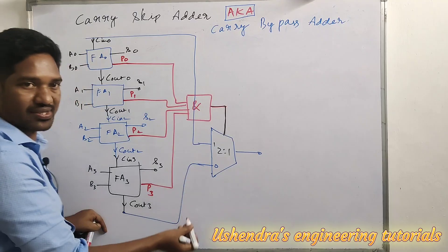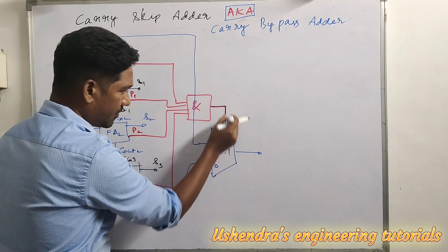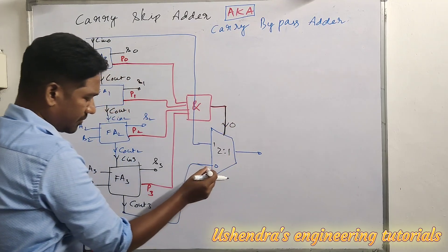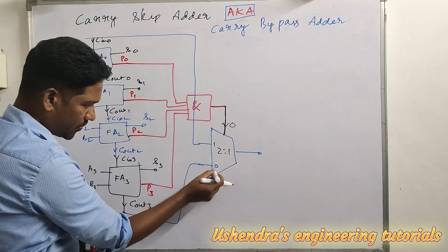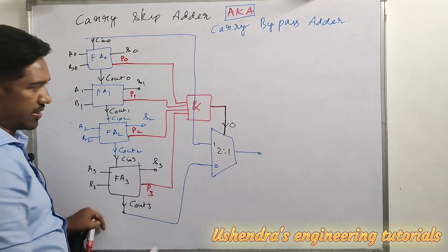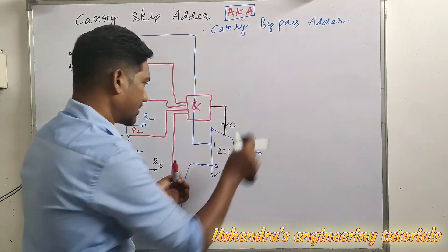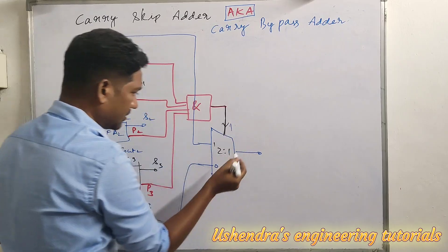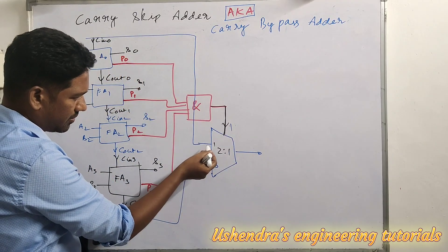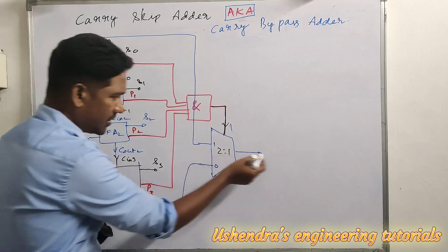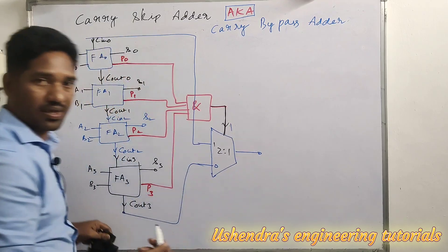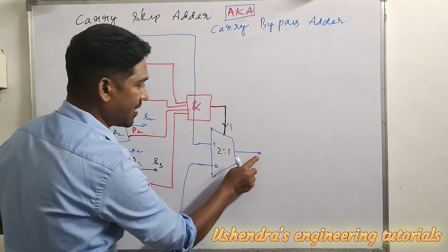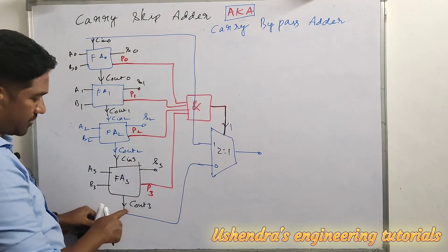The 2-to-1 MUX works as follows: when the selector line is 0, whatever data is in the 0th pin will be connected to the output. Whenever the selector line is at 1, whatever data is in pin number 1 will be forwarded to the output. This will be the final carry in a carry skip adder.